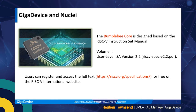The instruction set supported by the Bumblebee core includes the multiplication and division instructions, the code compression instructions, and also atomic instructions. According to the RISC-V standard naming convention, this can be represented as RV32IMAC.